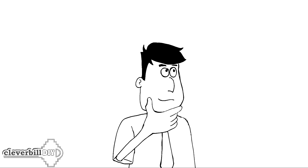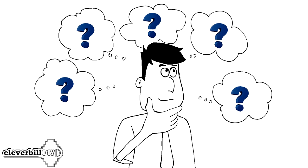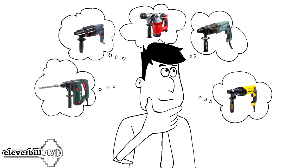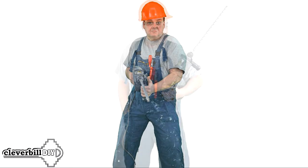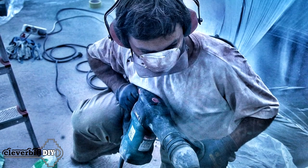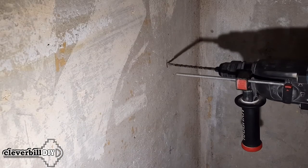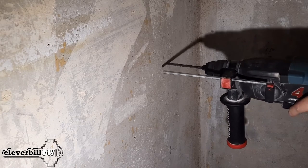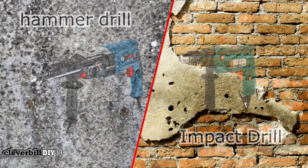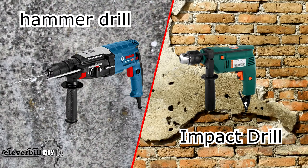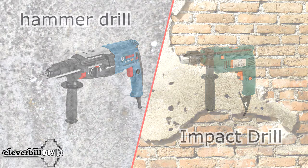Greetings to everyone on the Clever Build DIY educational channel. In this video we will talk about how to choose a hammer drill and what points you need to consider when choosing this tool. A professional builder and amateurs who want to build or repair something with their own hands cannot do without a hammer drill. A hammer drill is used to make holes in hard material such as concrete and should never be confused with an impact drill, since an impact drill is not designed to work with concrete — it is used for softer or hollow materials such as plaster or brick.